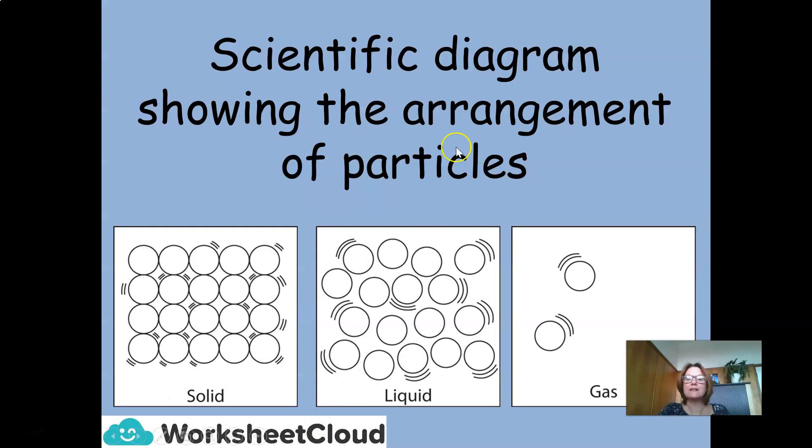Let's take a look at the scientific diagram showing the arrangement of particles. Here's a solid, very tightly packed together. No space between them. They are able to move very slowly. We cannot see them moving or they vibrate. In a liquid, slightly further apart. So there is space for them to now move around each other. And because they are moving, they are flowing around each other and move a little bit faster than what a solid does. A gas, on the other hand, the particles are much further apart with a lot of space between them. That's why they can be compressed and pushed back together. They are moving randomly in all directions and move very fast.